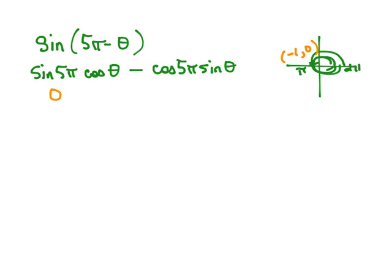So we're going to have 0 times the cosine of θ minus, okay now we need to find the cosine of 5π. So it would be at the same location and it would be the x-coordinate, so it would be negative 1 times the sine of θ.